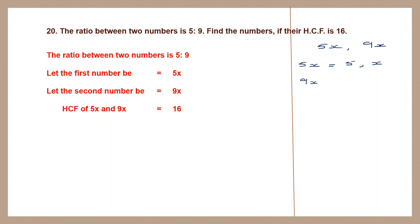The factors of 5x are 5 and x. For 9x, the factors are 3, 3 (since 3 threes are 9), and x. The only common factor between 5x and 9x is x. So the HCF of 5x and 9x is x. Since HCF equals 16, x is equal to 16.